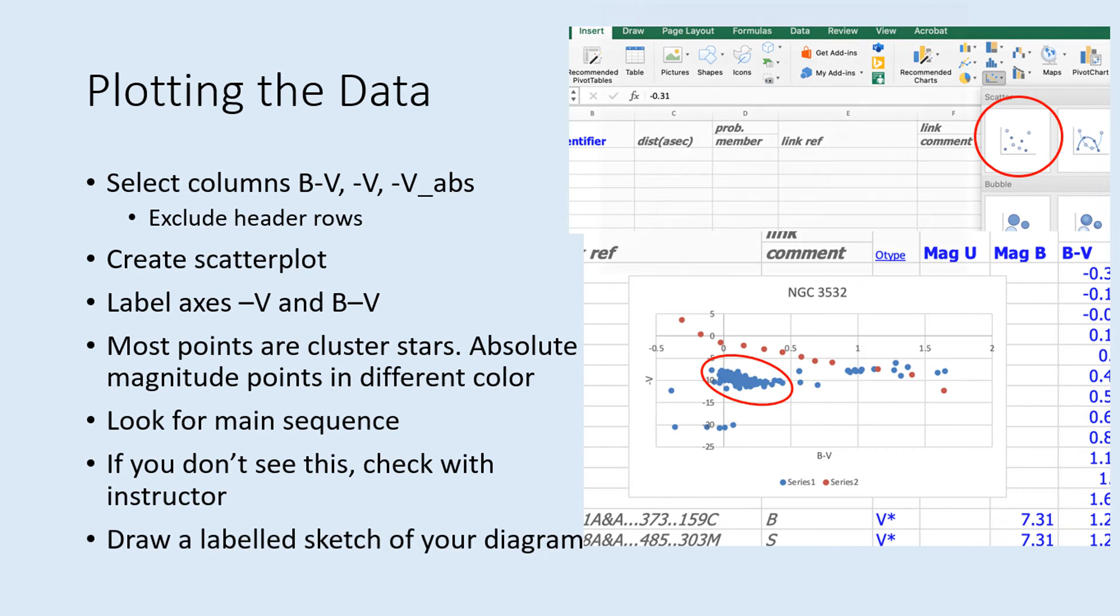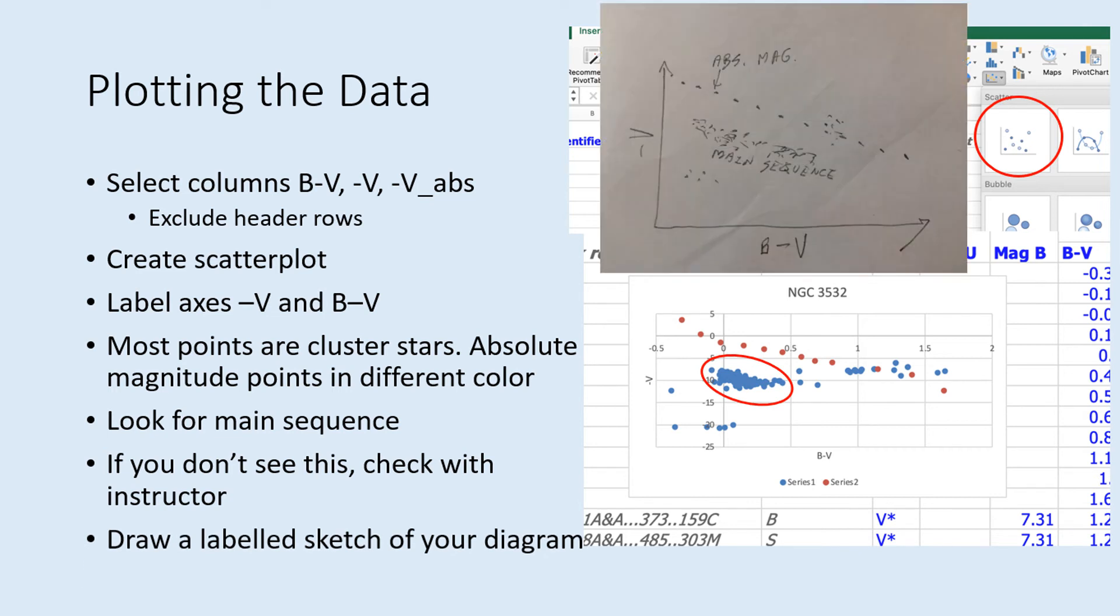Try drawing your own rough sketch of the graph. In the sketch, label things like the main sequence and the set of stars that mark out the absolute magnitudes.